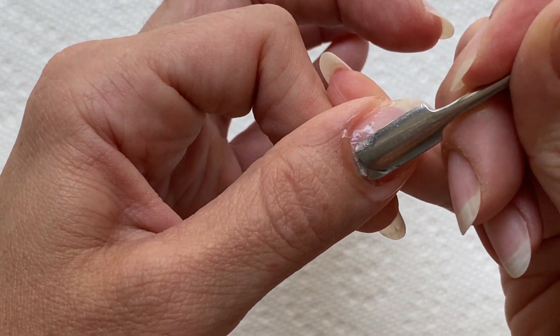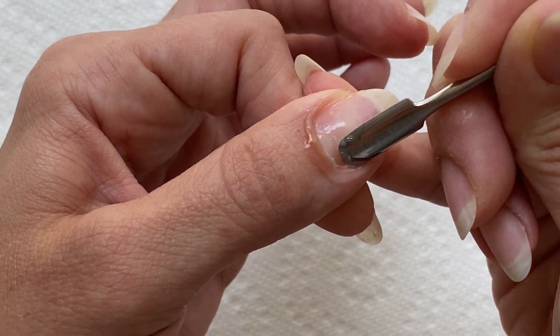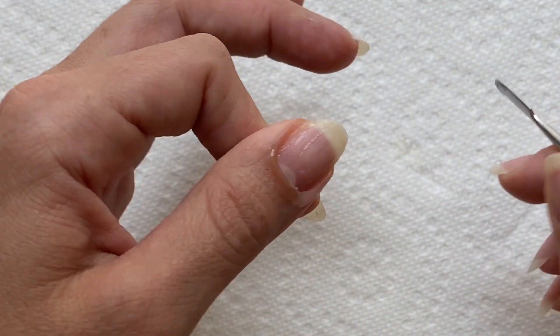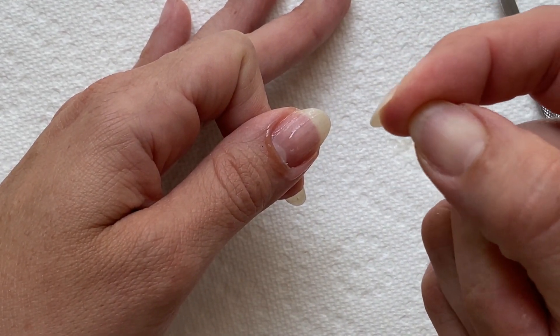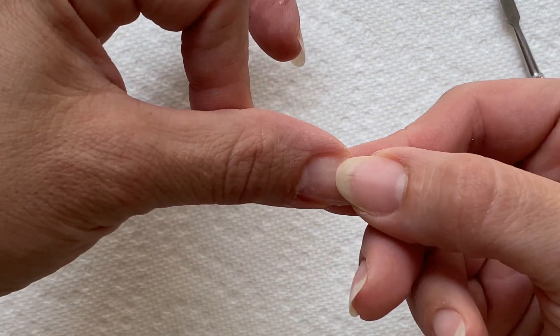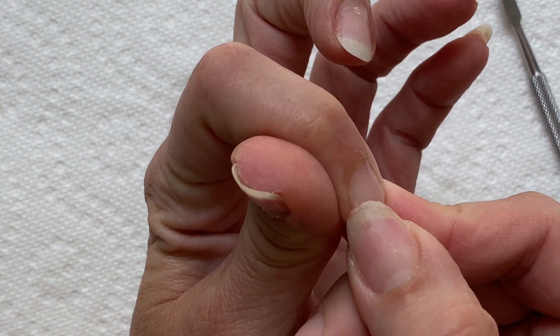So now, of course, many of you might not have a cuticle pusher and I'm going to help you out with that. What can we do if we don't have a cuticle pusher? Good news is we just filed our nails down so they're nice and strong. They're not flimsy. We can definitely go in with our nail.